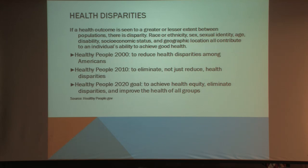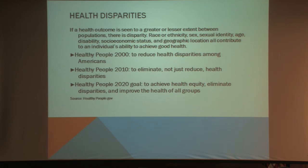Some of the work we've done in public health — I'm a public health person, and I worked for the state health department for a number of years before I came to the university. When we do planning, we've always gone to the Healthy People goals. Back then it was 2000, and our major goal was to reduce health disparities among all Americans. When we started planning for Healthy People 2010, we said we're not only going to reduce — we're going to eliminate health disparities. So have we done that? No, we haven't.